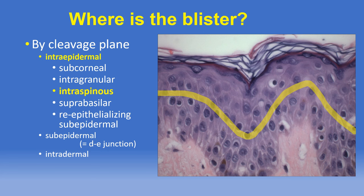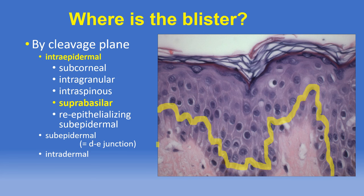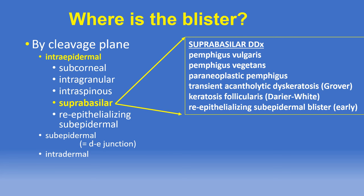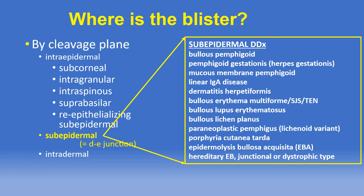Intraepidermal blisters centered within the stratum spinosum are relatively commonly encountered, attributable to the high prevalence of various forms of spongiotic dermatitis as well as superficial herpes simplex infections. Suprabasilar intraepidermal blisters are associated with cleavage planes just above the basal layer of keratinocytes and are associated with pemphigus as well as disorders associated with the epidermal reaction pattern of acantholytic dyskeratosis. Subepidermal blisters occur at the dermal-epidermal junction and comprise the largest and most diverse group of disorders in this lecture.